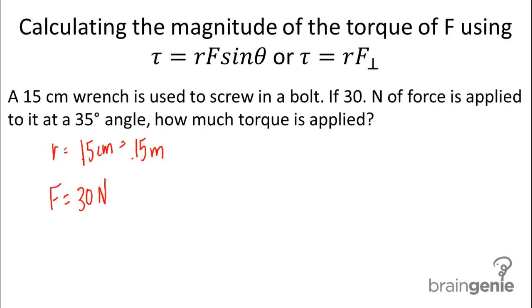F is 30 newtons and the angle is 35 degrees. Now let's go ahead and use the first formula, which is tau equals R F sine theta.